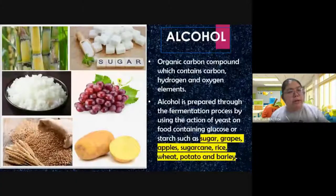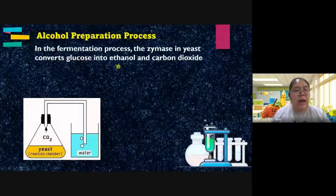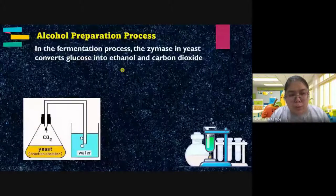For the fermentation process, zymase — one of the enzymes in the yeast — converts the glucose into ethanol and also carbon dioxide. When you see the word ending in '-ol', like ethanol, that is a type of alcohol. So zymase, one of the enzymes from yeast, breaks down the complex glucose into simpler products.